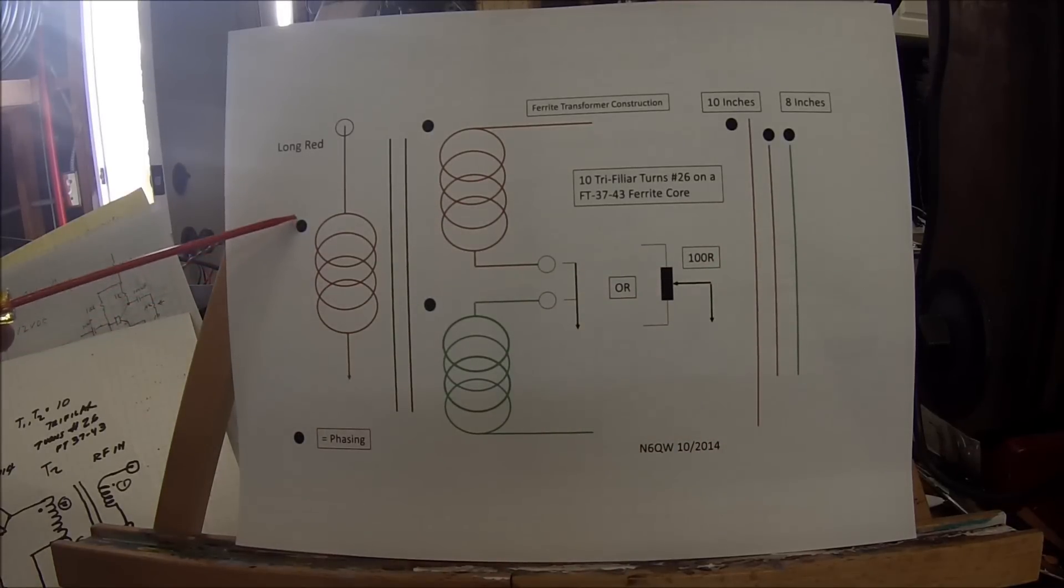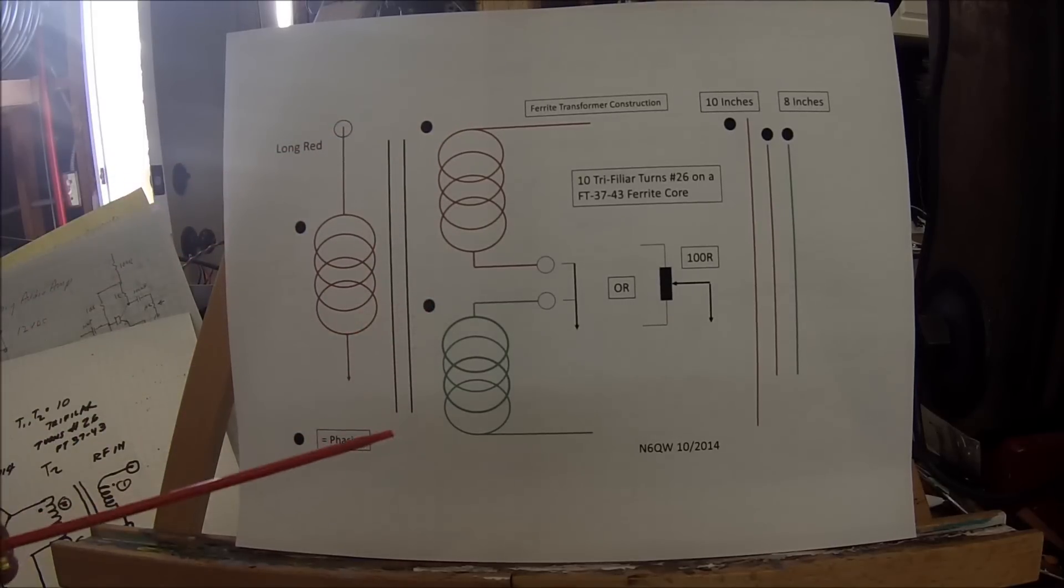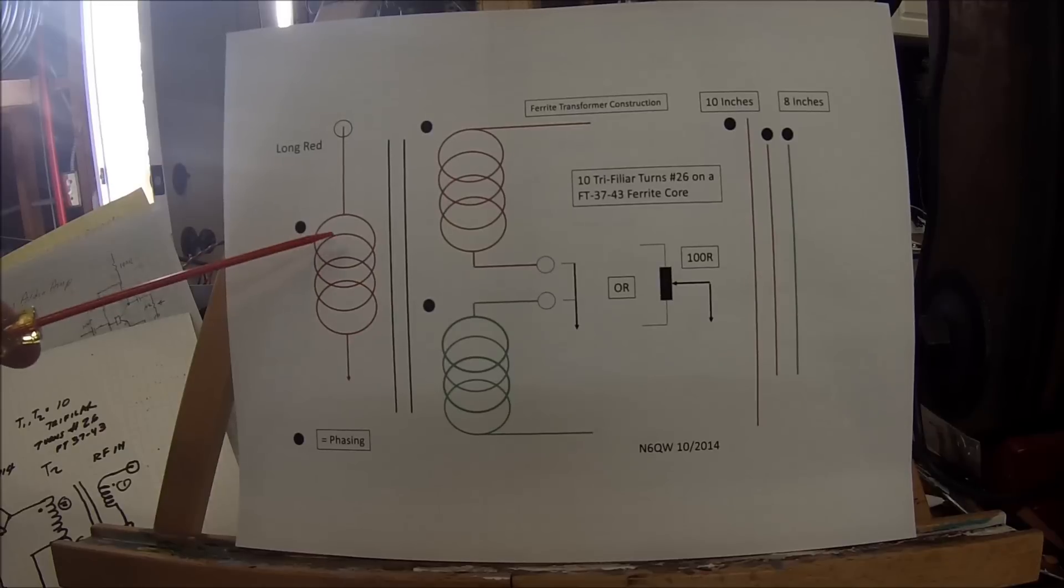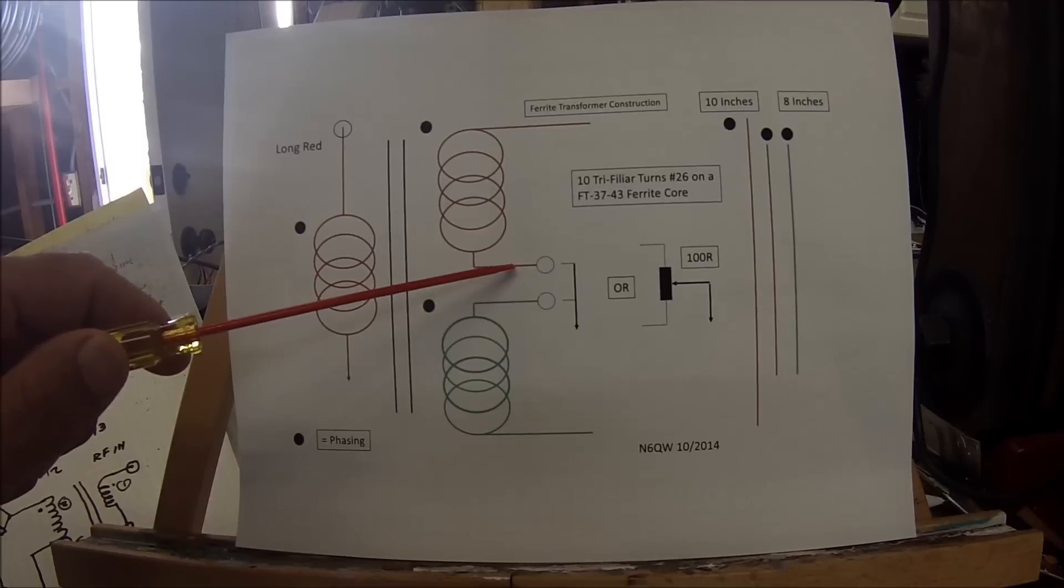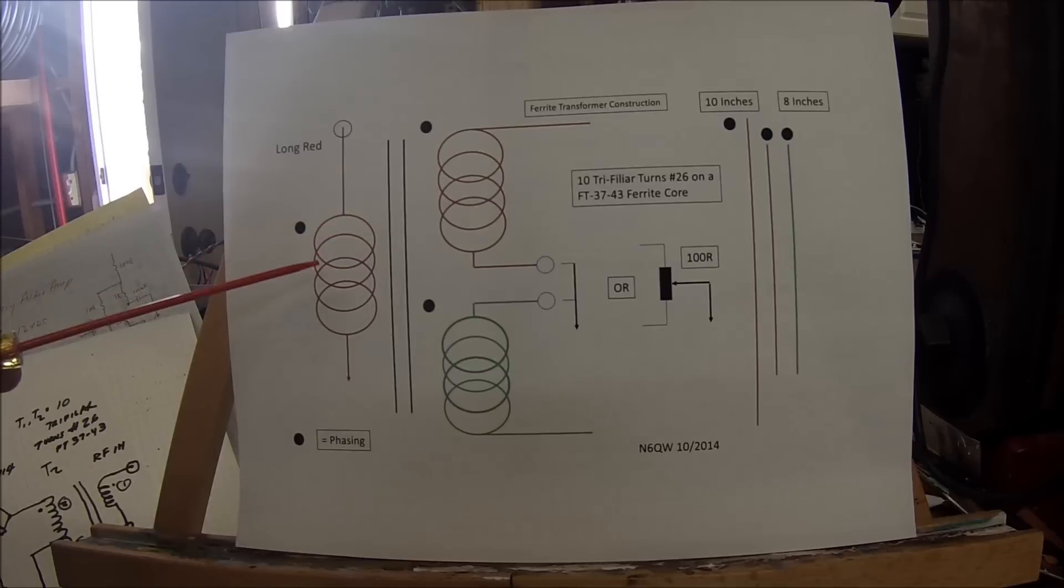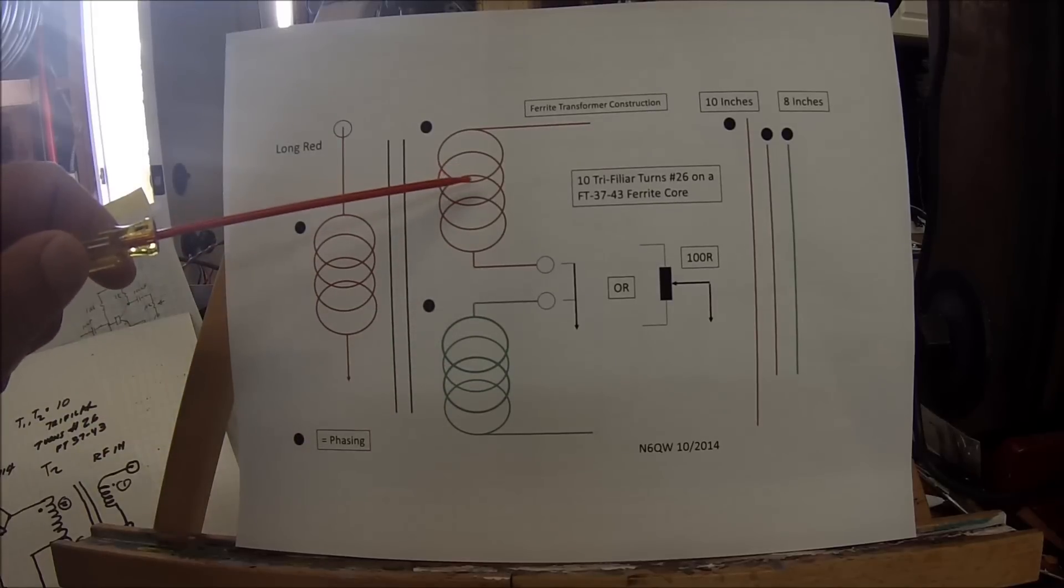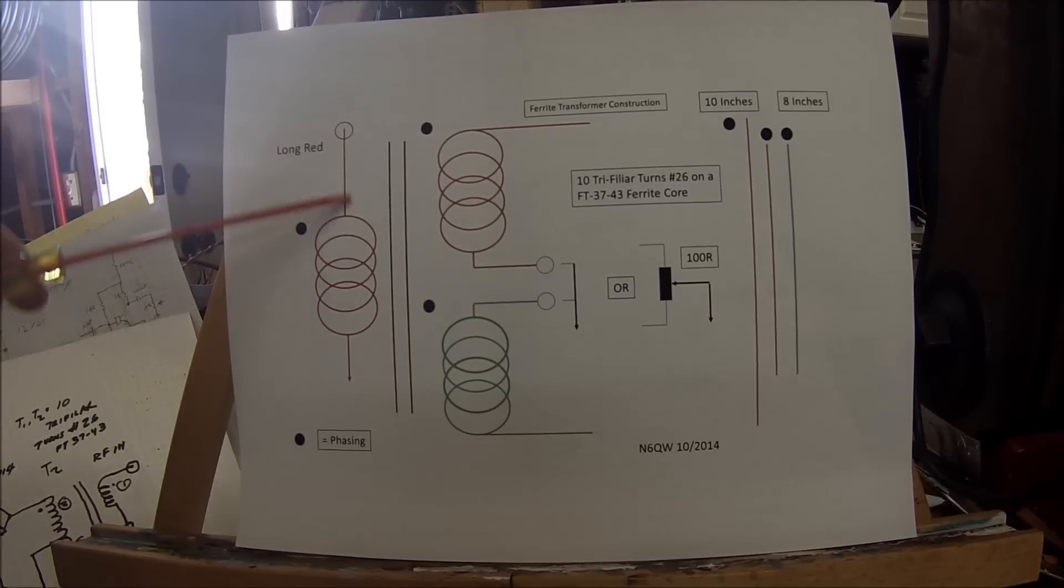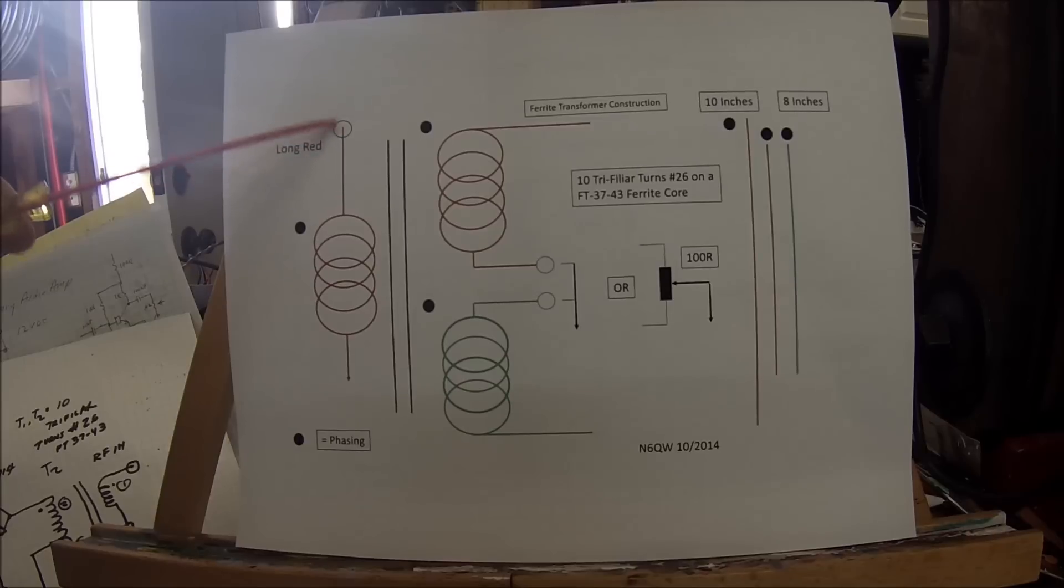We have what's called the phasing. This is the start of each winding. The connection point is from the completion of the red winding (number two) which connects to the start of the number three winding. A great aid in building these transformers is to use two different colors of wire - red and green. Make the ends longer so you can tell which wire is which.